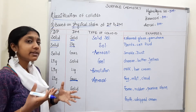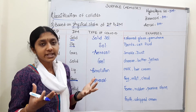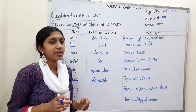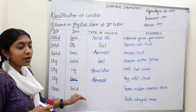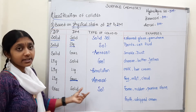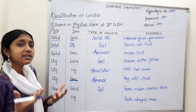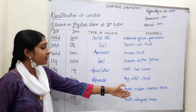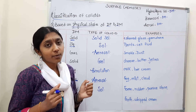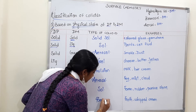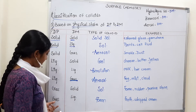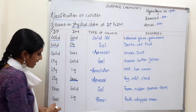Seventh type: gas in solid — examples include foam sheets, rubber, pumice stone, and grey stone. Gas in liquid is also a colloid type — examples include froth, whipped cream, and soap bubbles. The colloid of gas in liquid is called Foam.